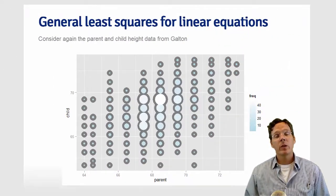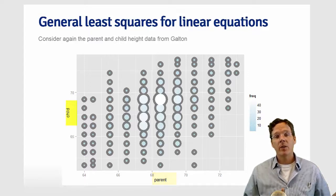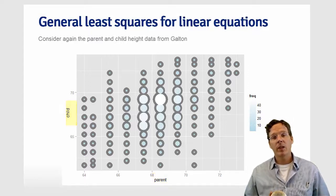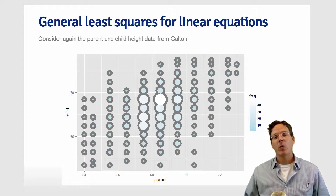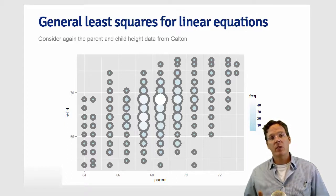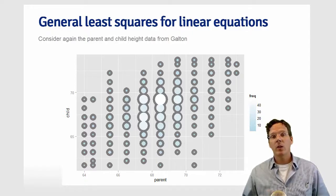Consider again when we're looking at the scatter plot of the parent's heights by the child's heights from the Galton data. The size of the circle represents the frequency of that particular x-y combination. We'd like to use the parent's heights to explain the child's heights, and we're going to do it using linear regression.